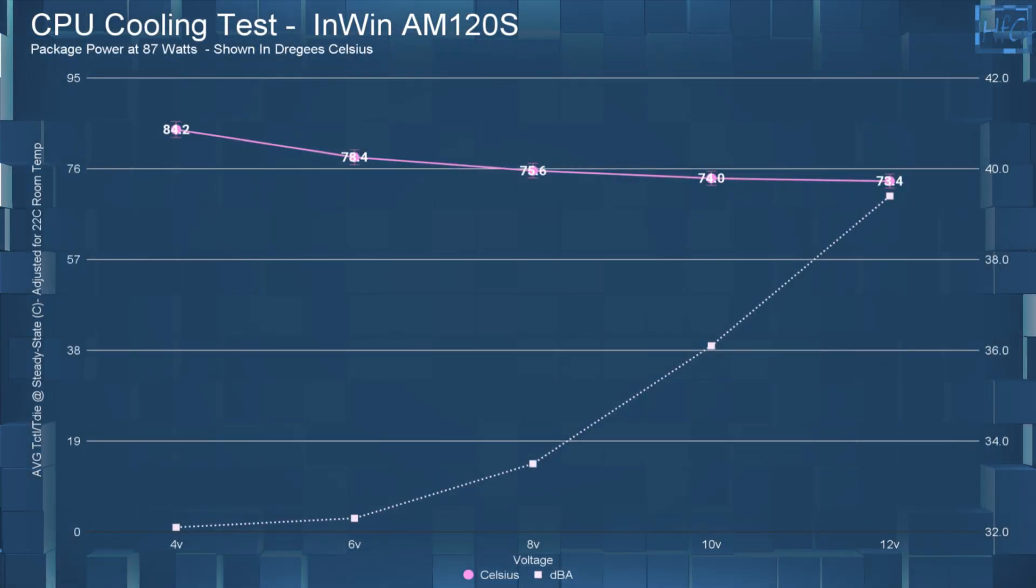Moving on to the CPU cooling performance. At 4 volts, the average steady state CPU temperature was 84.2C. At 6 volts, it was 78.4C. At 8 volts, it was 75.6C. At 10 volts, it was 74C. And at 12 volts, it was 73.4C.